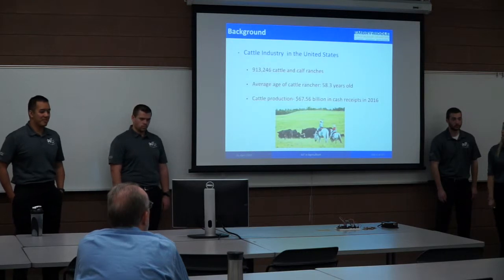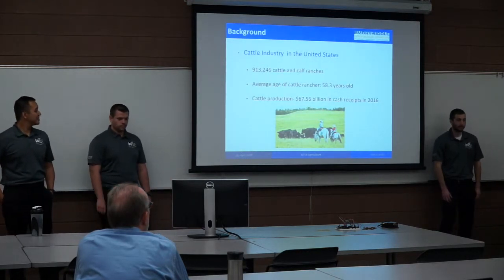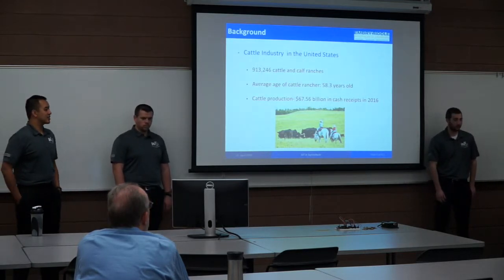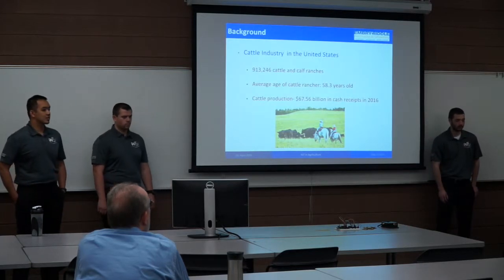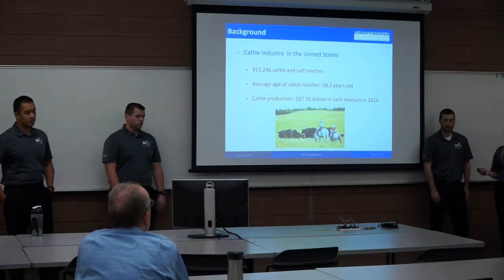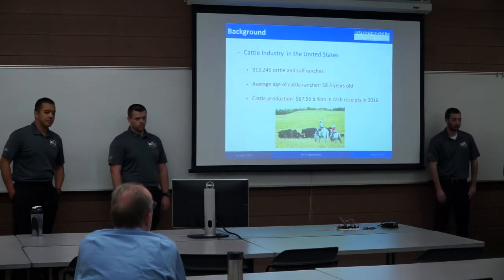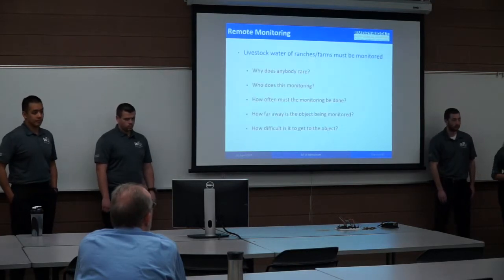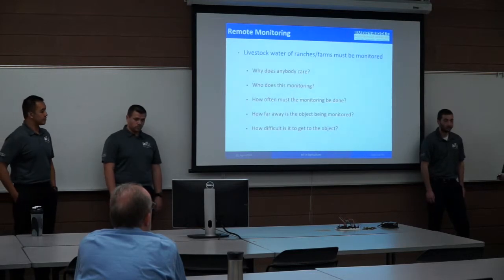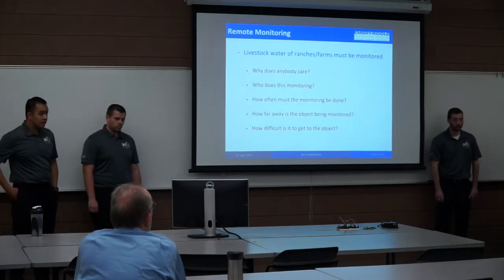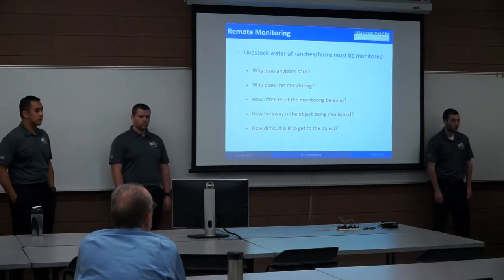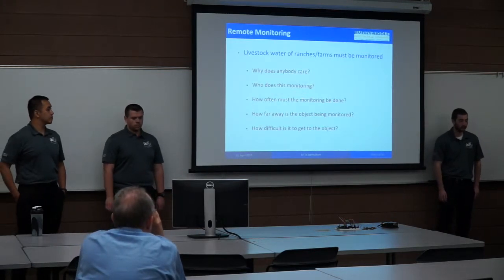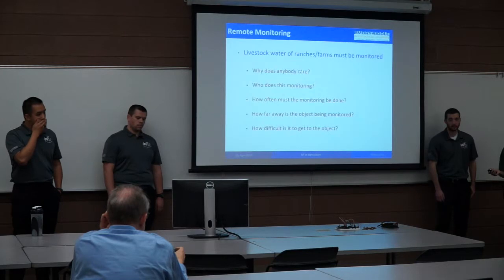Zooming in a little bit more into agriculture, there's also the cattle industry. There are 913,246 cattle and calf ranches in the United States. Another surprising fact is that the average age of a calf rancher is 58.3 years. Cattle production in 2016 accounted for $67.56 billion in receipts. It's worth a lot of money in the United States.